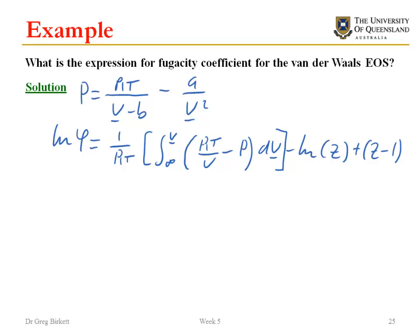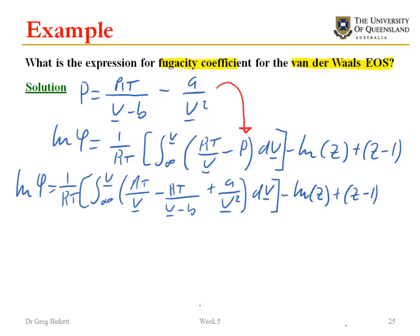The example that we're doing is looking at the van der Waals equation of state and trying to come up with an expression for the fugacity coefficient. What we've got here is the equation for the van der Waals equation of state and then the equation from the previous slide for the fugacity coefficient. What I'm going to do now is substitute the equation of state into here and then start working through the solution. First of all substituting in, when I do that I get this equation here.